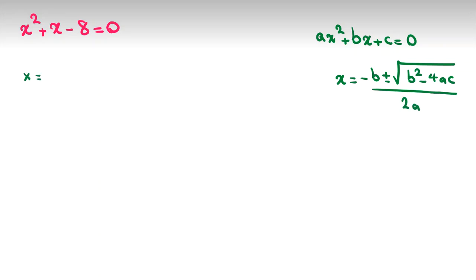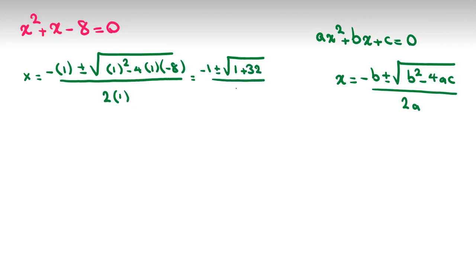x will be negative 1 plus minus square root of 1 minus 4 times 1 times negative 8, all over 2. It will be negative 1 plus minus square root of 1 plus 32, which is 33, all over 2. So x equals negative 1 plus minus square root of 33 over 2.